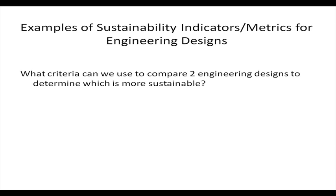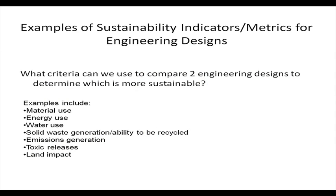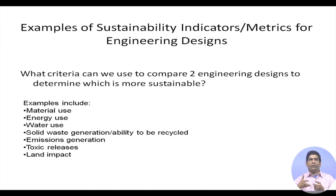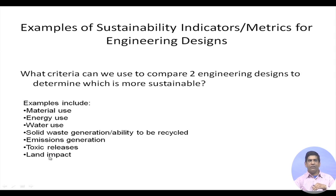There are sustainability indicators and metrics for engineering design. These criteria can be used to compare engineering designs to determine which is more sustainable. Some examples include material use, energy use, water use, solid waste generation, ability to be recycled, emissions generation, toxic release, and land impact. As part of life cycle analysis, we try to quantify all these different parameters — and you will see several examples of how LCA is done when we get to week two.